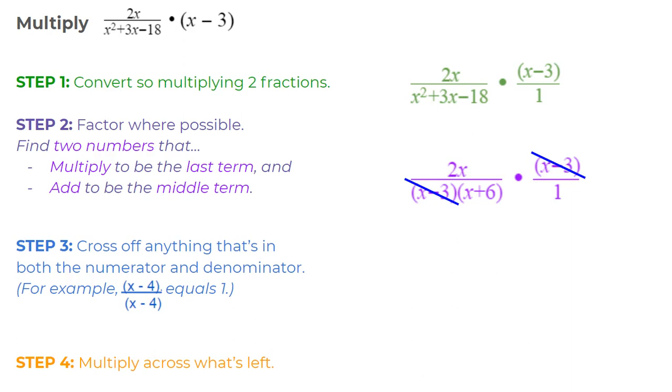Now I'm going to multiply across and see what's left. And so in my numerator, I just have a 2x. In my denominator, I have an x plus 6 times 1, which is x plus 6. So my answer is 2x divided by x plus 6.